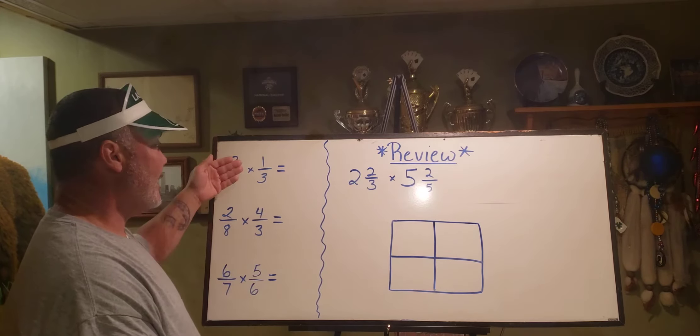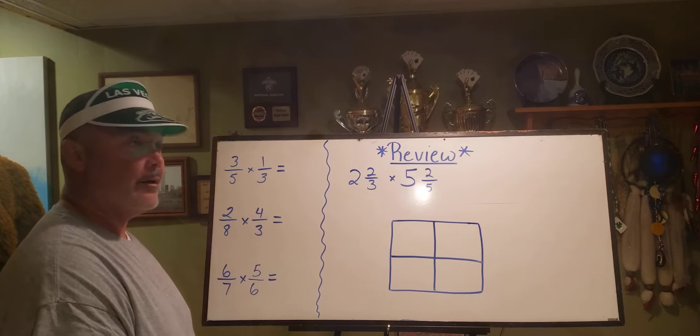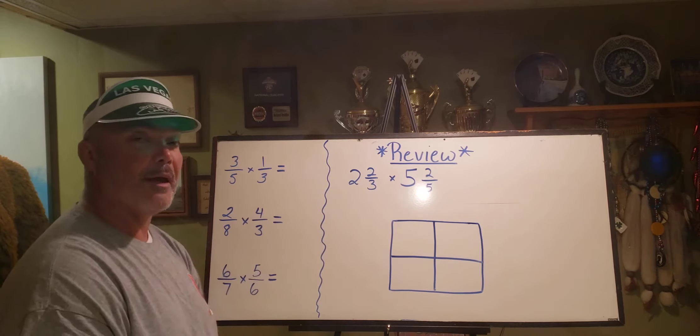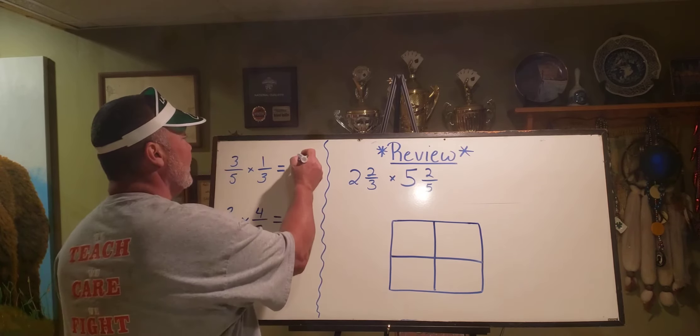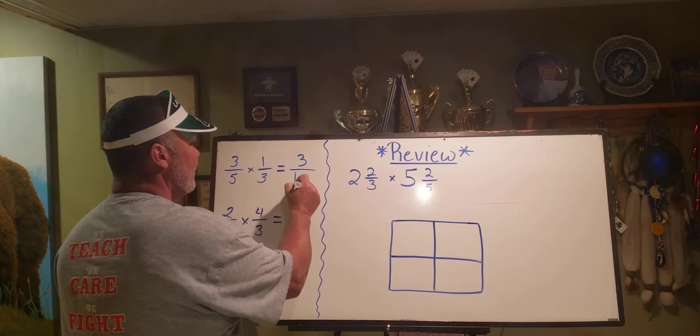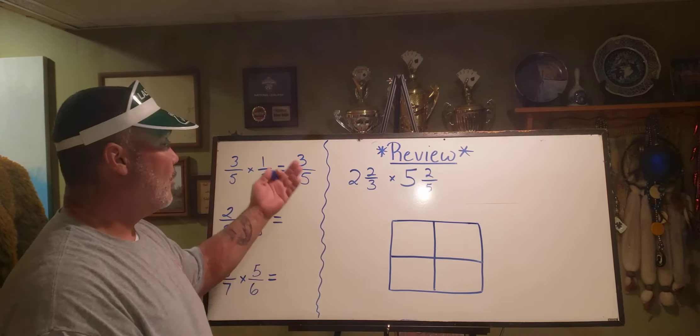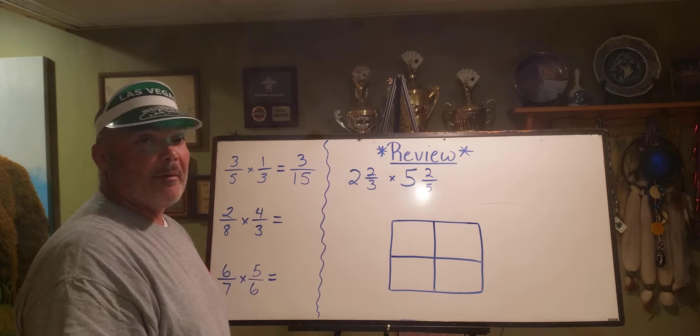Three divided by five times one divided by three. Well, we can clearly just multiply across and get three fifteenths. That would be your answer, or three divided by fifteen.